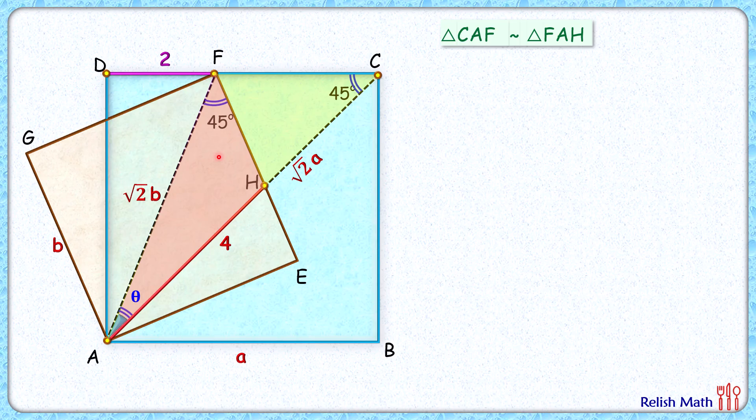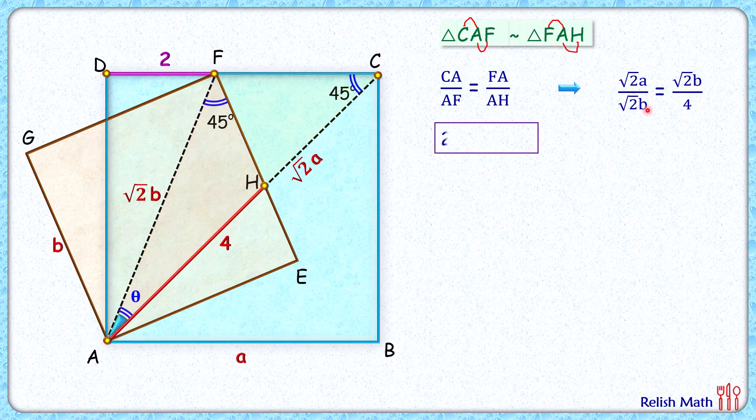As the triangles are similar, the ratio of corresponding sides will be equal. CA upon AF will be equal to FA upon AH. Putting the values here: CA is the diagonal, that's root 2a. AF, that's the diagonal of brown square, root 2b. FA is also diagonal, same root 2b. AH is given as 4 centimeters. Now cross-multiplying and simplifying, we'll get 2 times root 2a equals b squared.